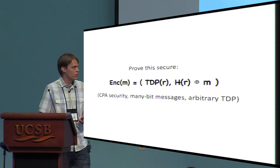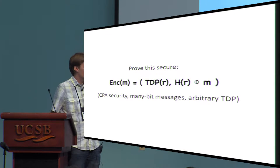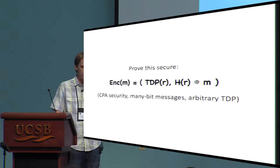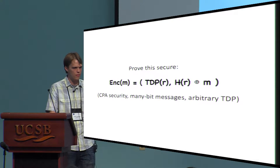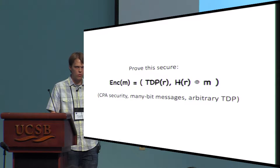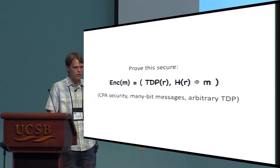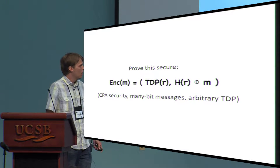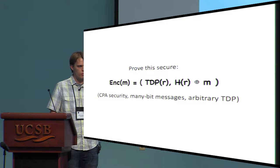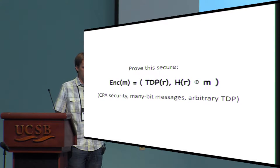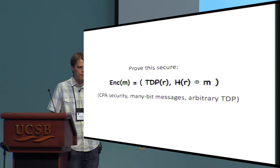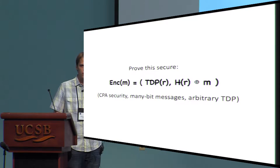I'm going to start off with a bit of motivation for this work. Take the following encryption scheme — this is a very standard way of converting a trapdoor permutation into a public key encryption scheme. Choose some randomness R, apply the trapdoor permutation to get the message header, then hash R using some hash function and use that as a one-time pad to encrypt the message M. Now suppose I ask you to prove CPA security of this scheme, handling many-bit messages using a single randomness R, with a proof that works for arbitrary trapdoor permutations.